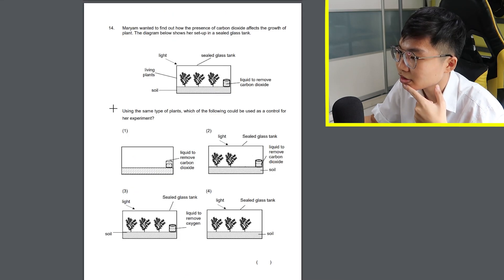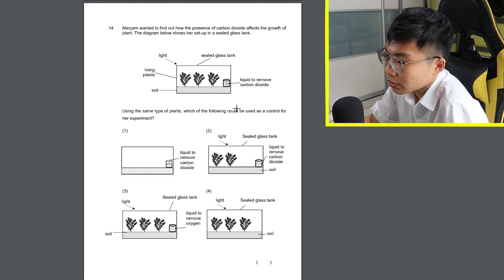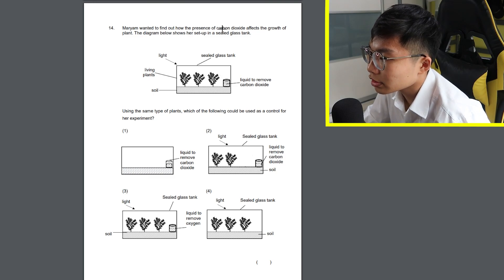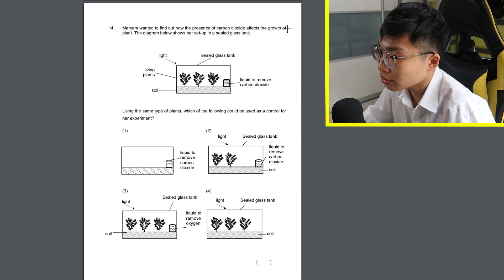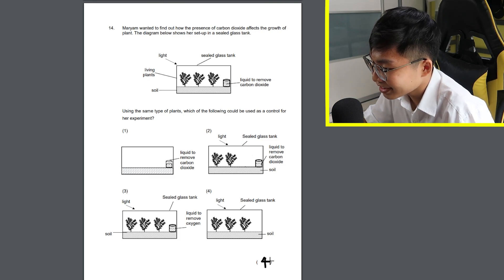Oh my god, what is this? Using the same type of plants, which of the following could be used as a control for her experiment. Find out how the presence of carbon dioxide affects the growth of plants. Oh, so just remove the liquid. Easy.